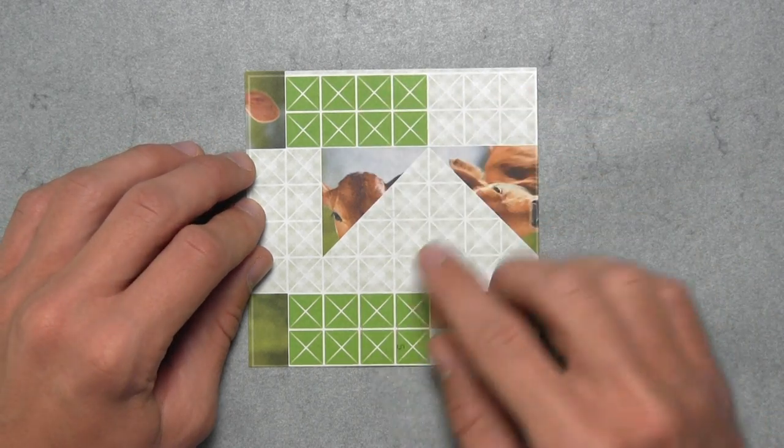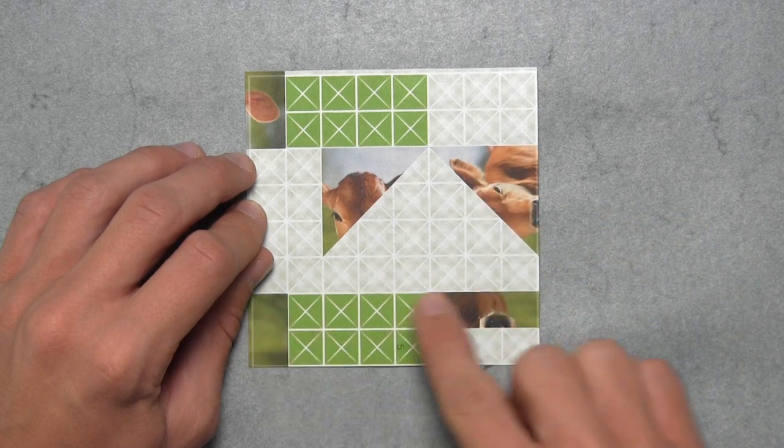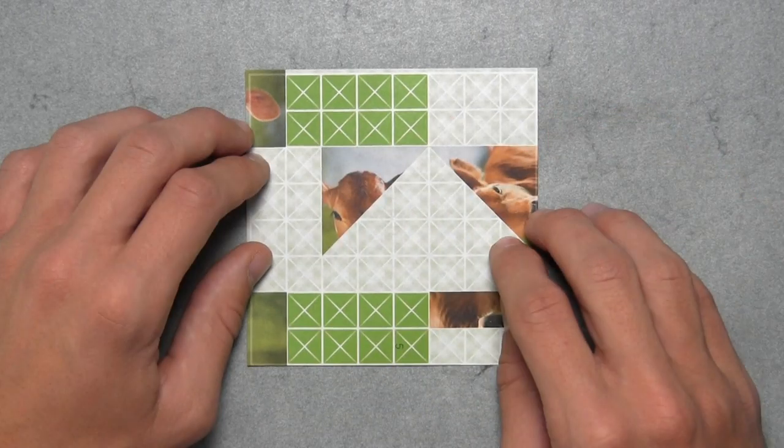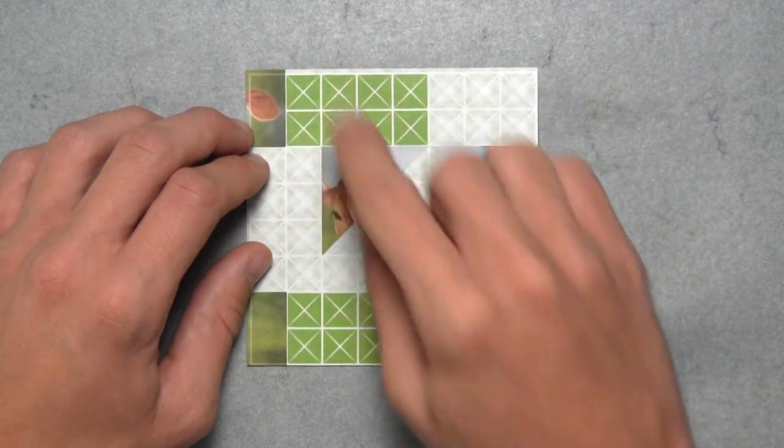We want all of these green squares to align in a 4x4 grid on the back of the puzzle, and we want all of the pieces of this picture to come together on the front side of the puzzle. Keeping that in mind, we want this portion of the picture to be on the front, and we want this grid of green squares to be on the back.